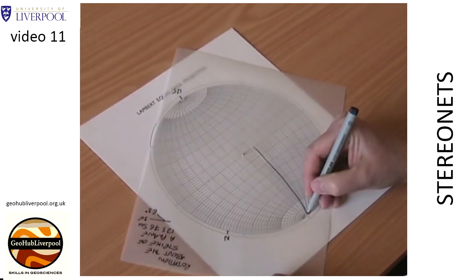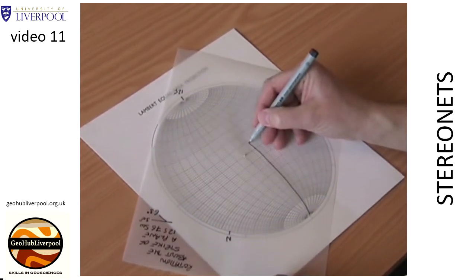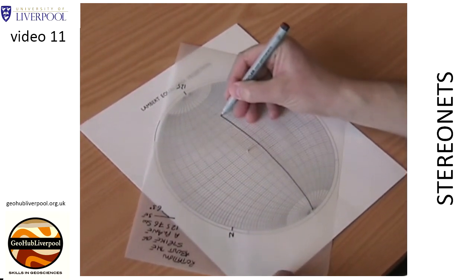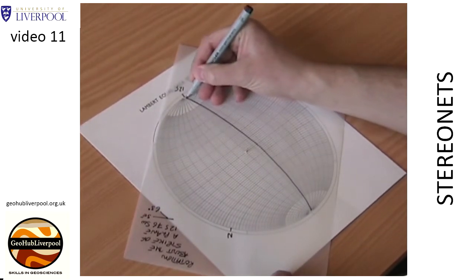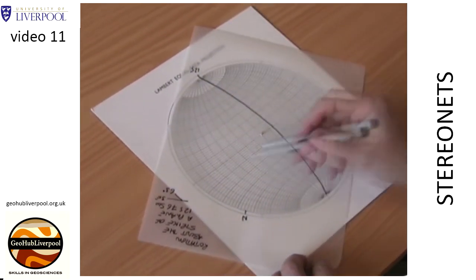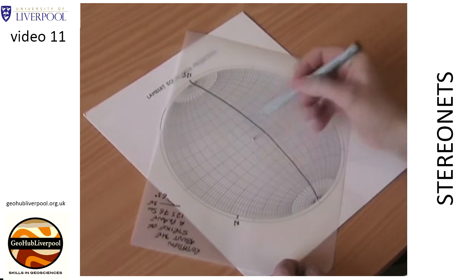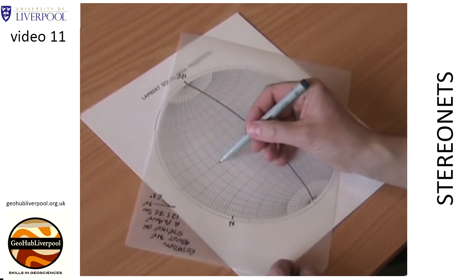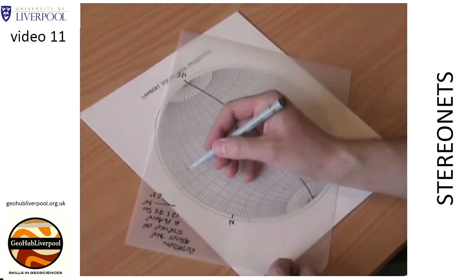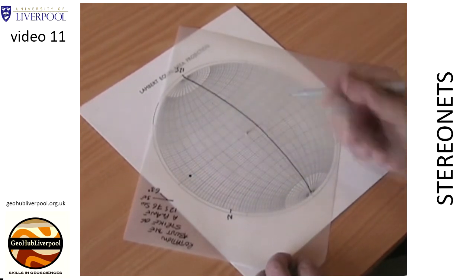Hold the tracing paper in place and draw along the great circle that this point lies on. Measure 90 degrees along the equator from the great circle and mark on the tracing paper the pole to the plane.